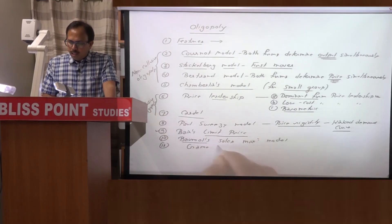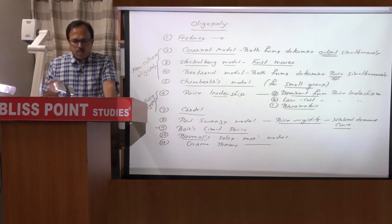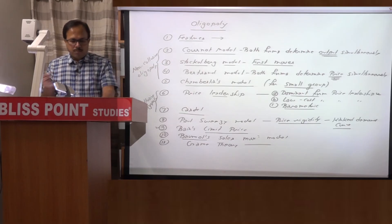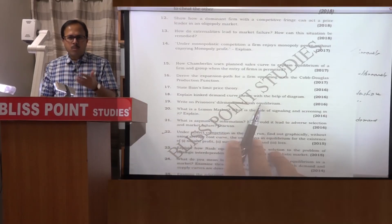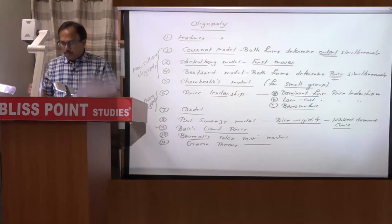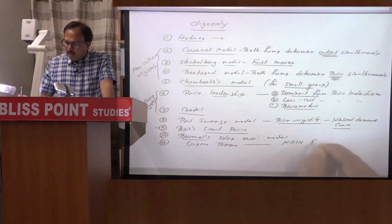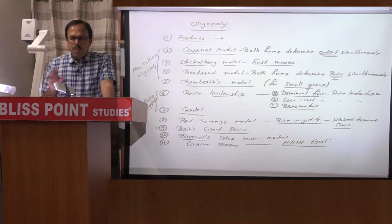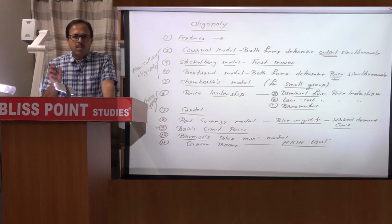The eleventh topic is game theory. In 2016, question number 19 asked to write on prisoner's dilemma and Nash equilibrium. There are many questions from oligopoly that are frequently repeated. We will cover at least the basic concepts: what is prisoner's dilemma, what is Nash equilibrium, what is a pure strategy, what is a mixed strategy, and the significance of each. Numerical questions have not been asked so far, so we are not going into the full depth of game theory.